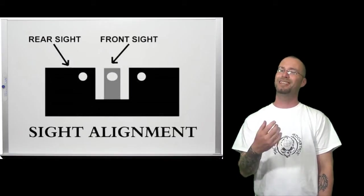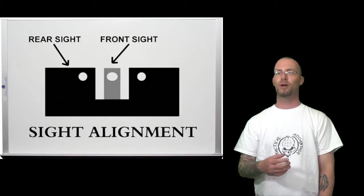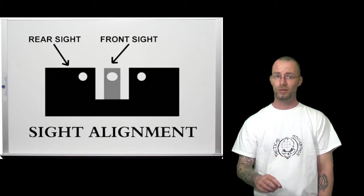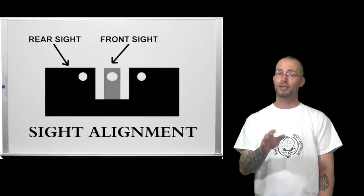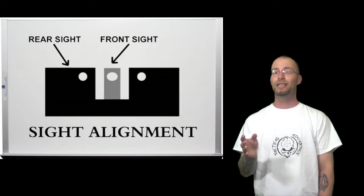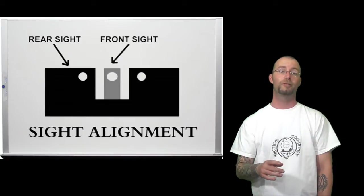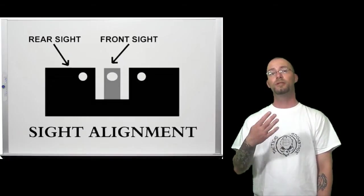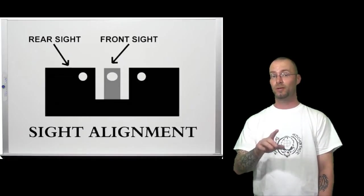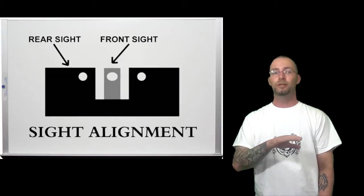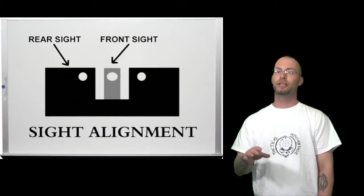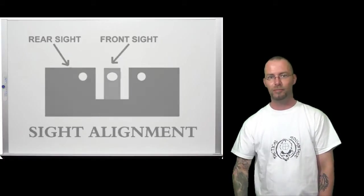This type of design nearly 100% of the time requires the operator to have the center post or the blade lined up flush and level with the rear sight while having equal distance on either side of the front sight post in relation to the rear sight notch, resulting in the dots of the sights if so equipped to create a level trio of dots. Sounds simple right?